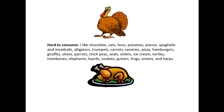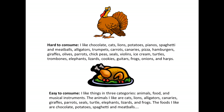Let's look at how you could cook the dish. We're cooking the turkey this time so he's easy to consume. 'I like things in three categories: animals, food, and musical instruments. The animals I like are cats, lions, alligators, canaries, giraffes, parrots, seals, turtles, elephants, lizards and frogs. The foods I like are chocolate, potatoes, spaghetti and meatballs, etc.' You see what I've done? I've given the reader a way to categorize, to hang on to the information — a framework. Probably you wouldn't remember too many specifics, but you might remember that I like things in three categories: animals, food, and musical instruments. That might be the most important thing for the reader to remember. Rather than giving a litany of information, helping your reader create and keep a framework is part of what makes academic writing so strong.